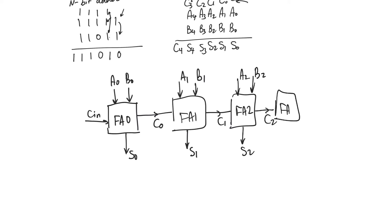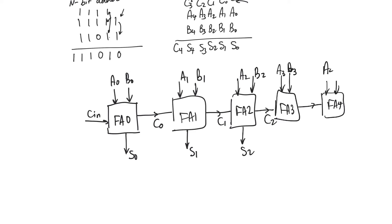So we will need two more full adders, which add the bits from the operands together with the carry-ins coming from the carry-out of the previous bit position. So this is going to produce C3, S3, and S4.